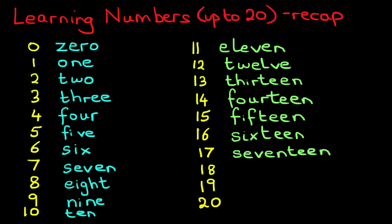The next one is 18. E-I-G-H-T-E-E-N. Just make sure you don't write two T's here. E-I-G-H-T-E-E-N, eighteen.